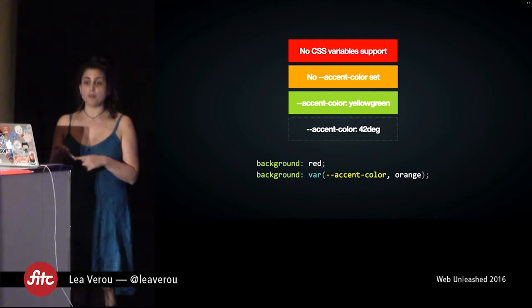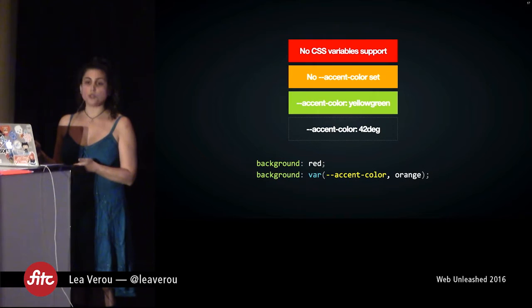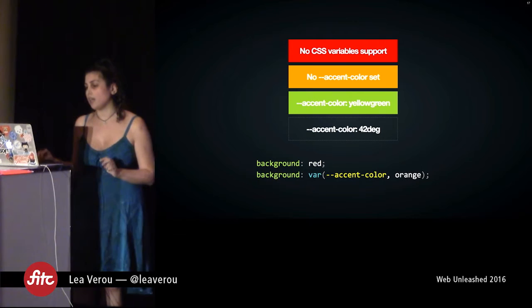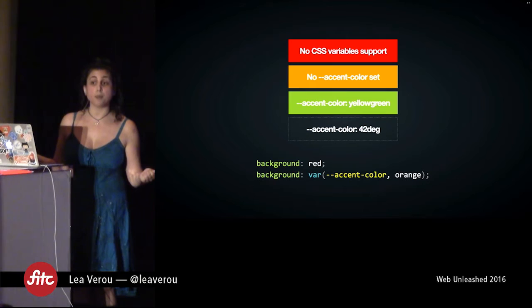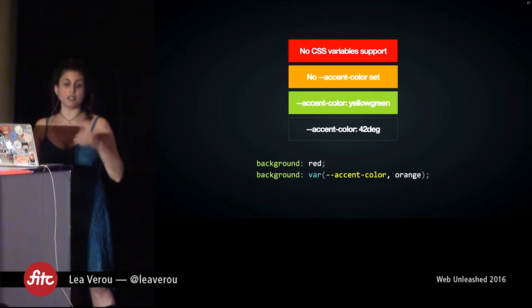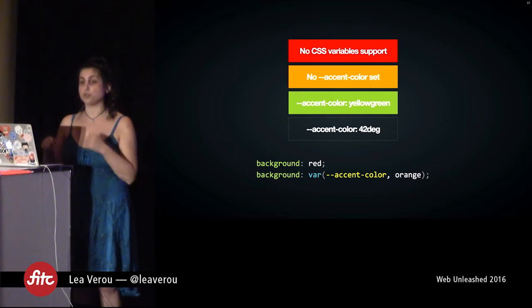The reason you get transparent is that by the time the browser realizes '42 degrees' is nonsensical for background, it has already thrown away 'red'. It can't use 'orange' either, because accent-color does have a value. So it falls into a new concept we didn't have before CSS variables: 'invalid at computed value time'. What this does is cause the property to resolve to its initial value, which for background is transparent. This is different from a declaration being invalid at parse time, where you would get the previous value.